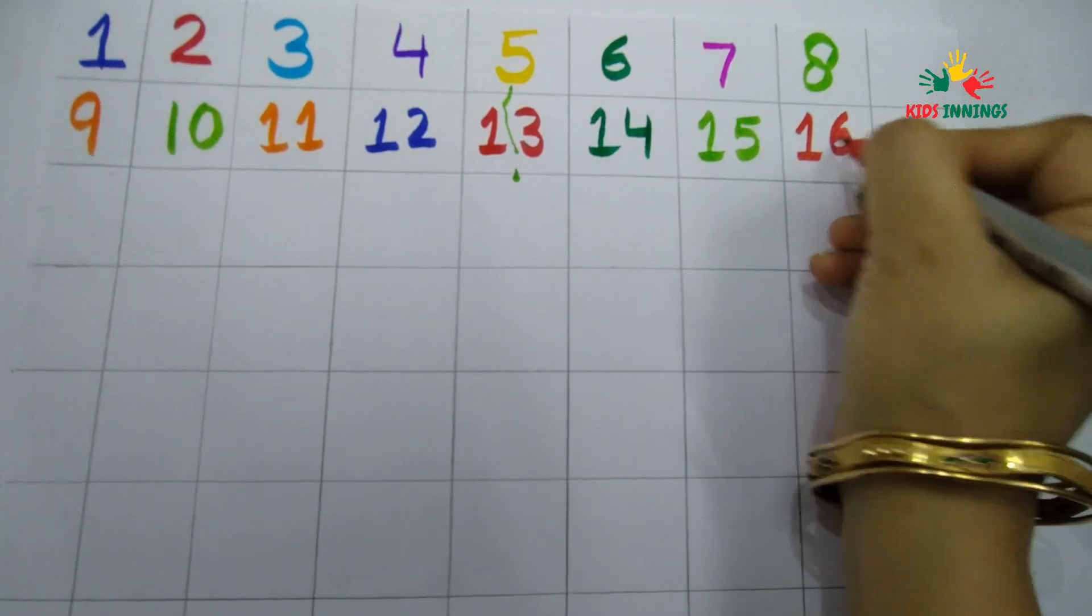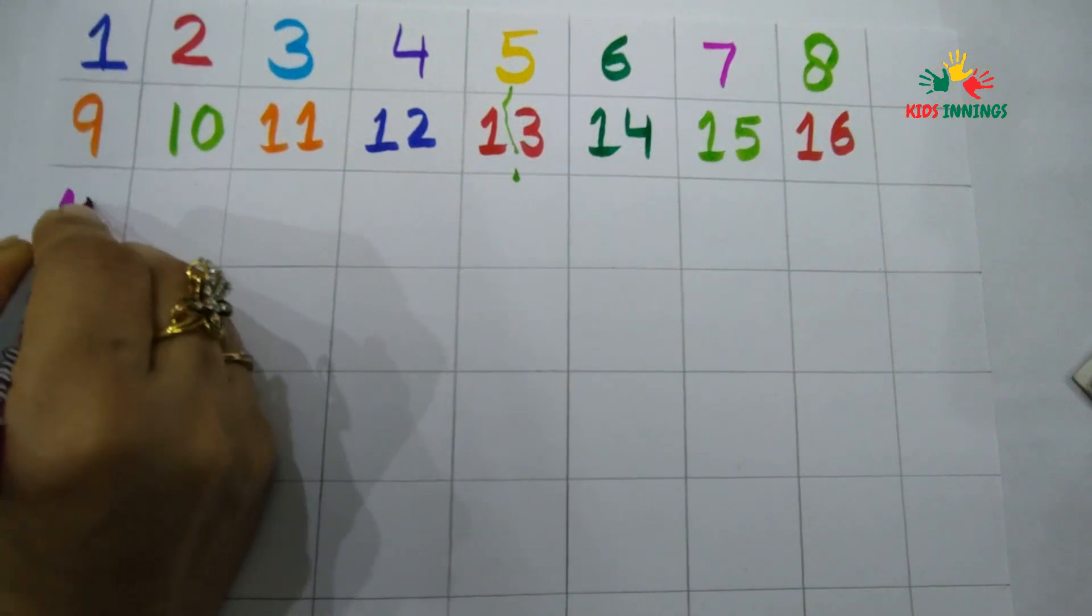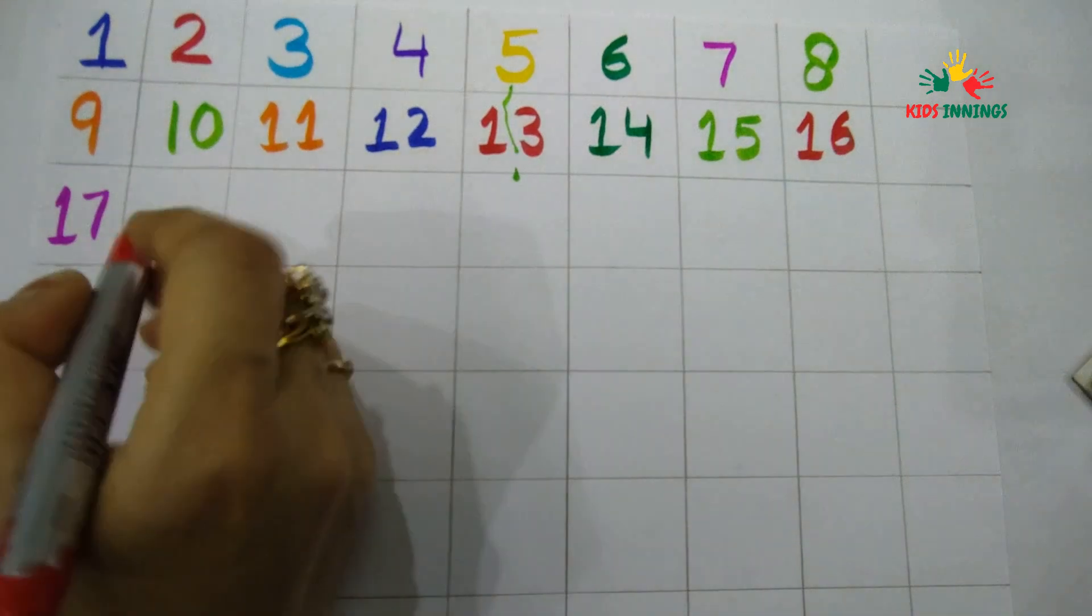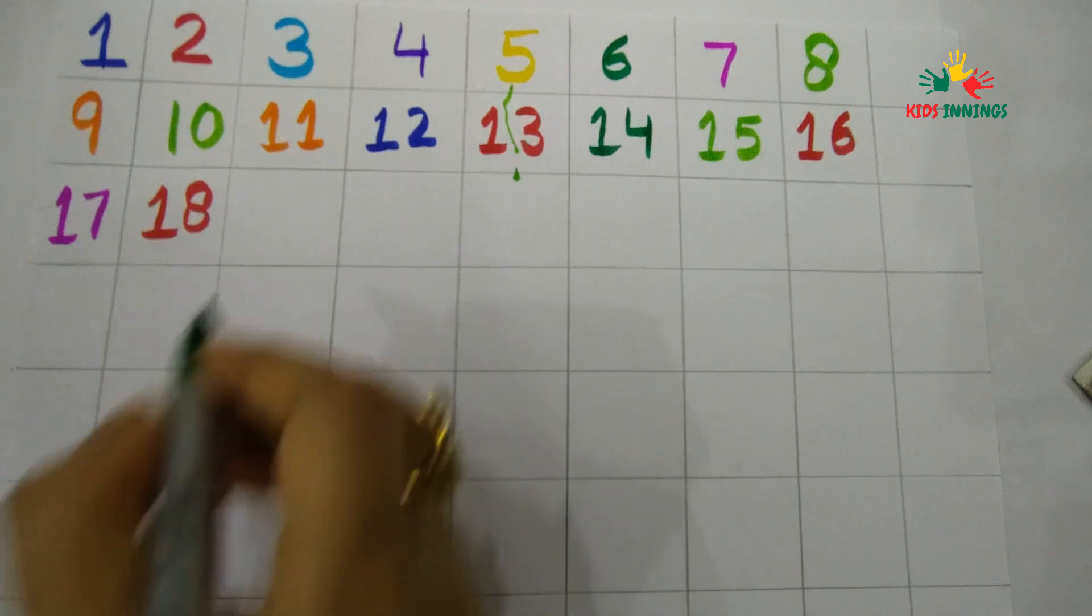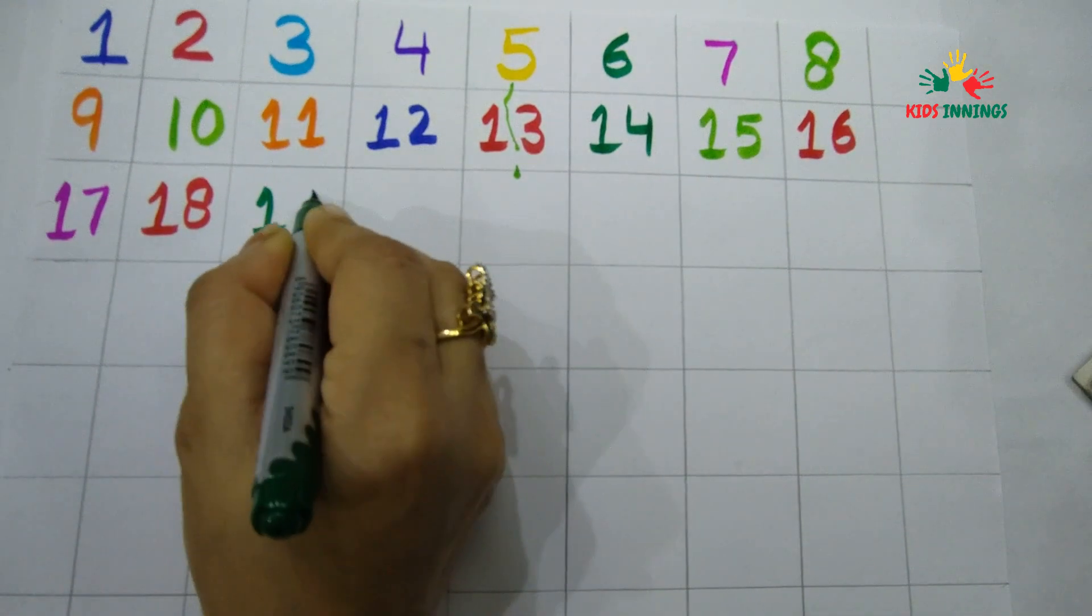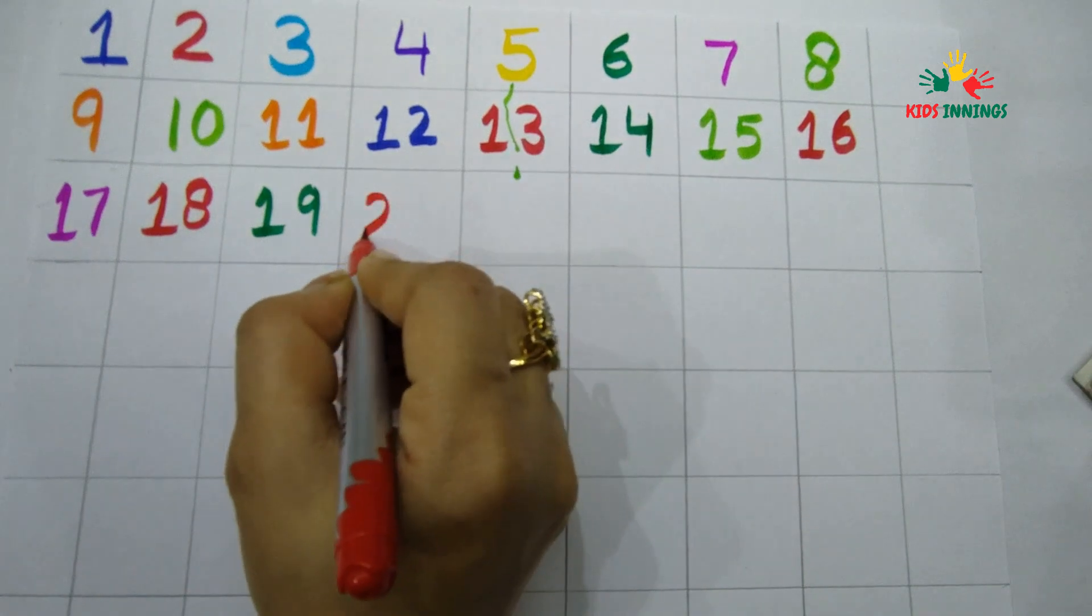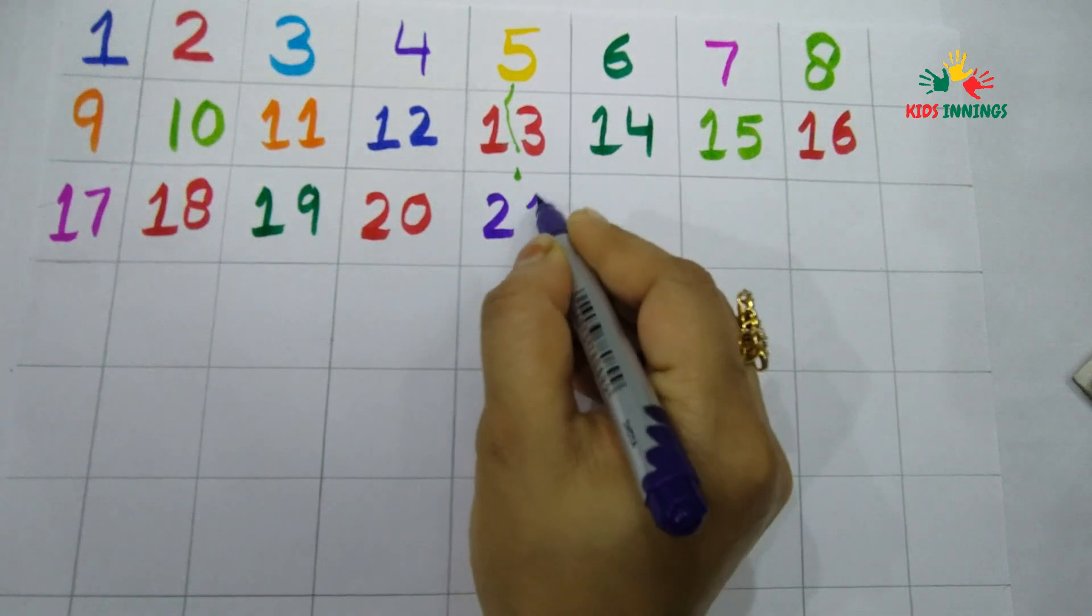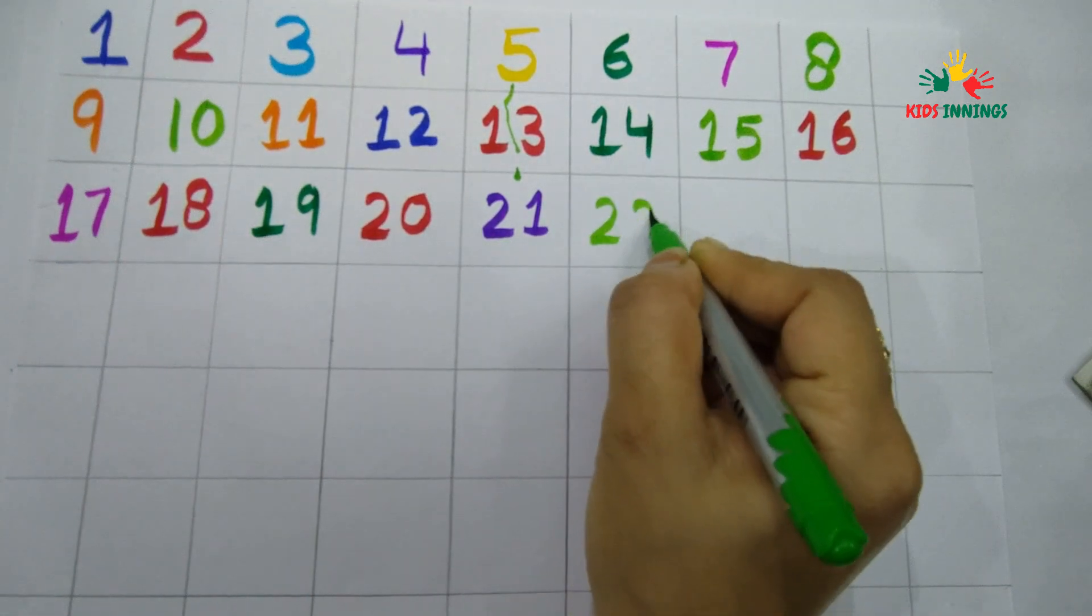Seventeen (one seven), eighteen (one eight), nineteen (one nine), twenty (two zero), twenty-one (two one), twenty-two (two two).